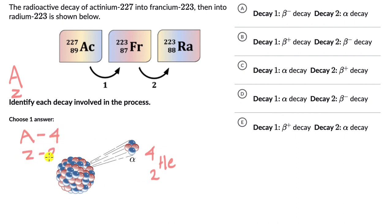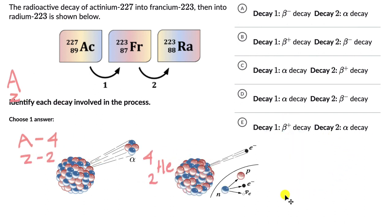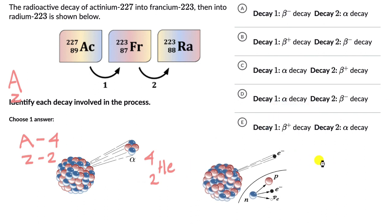There is one more decay called beta minus and there is also beta plus decay. In beta minus decay, a neutron really changes into a proton by also emitting an electron.